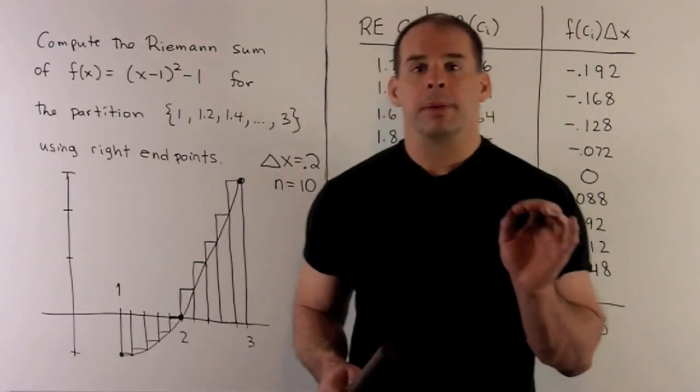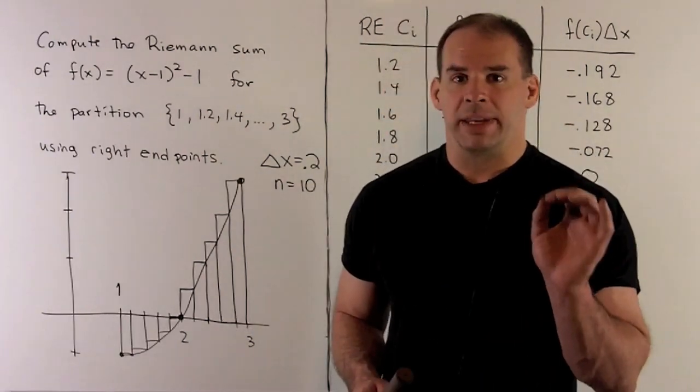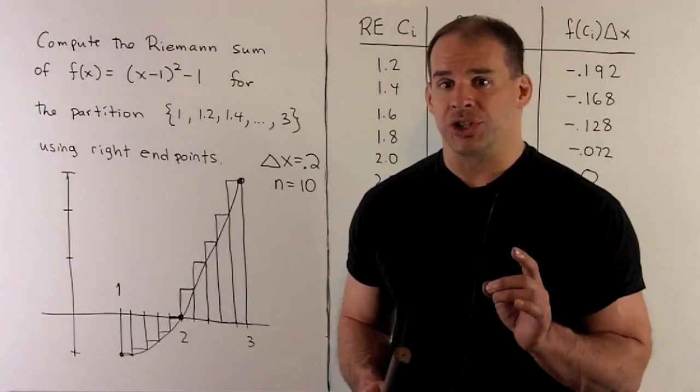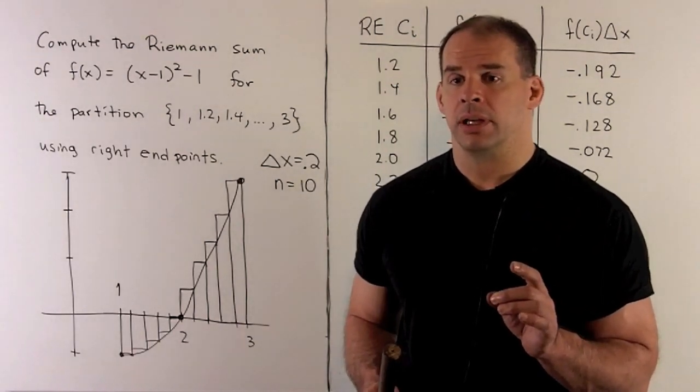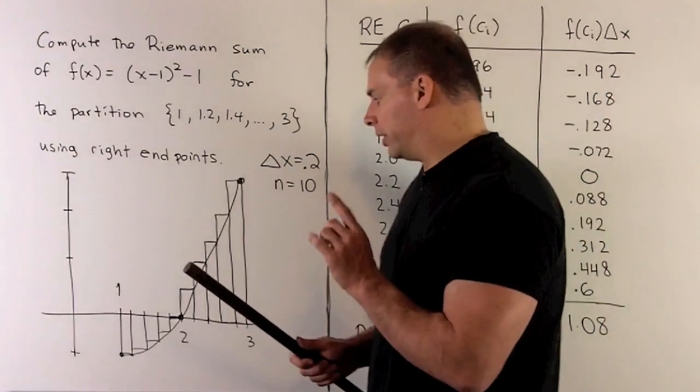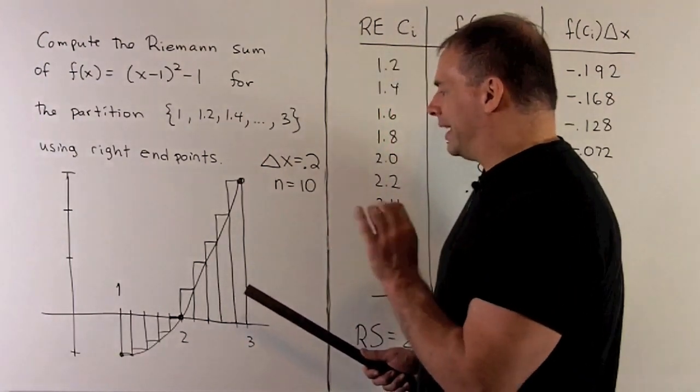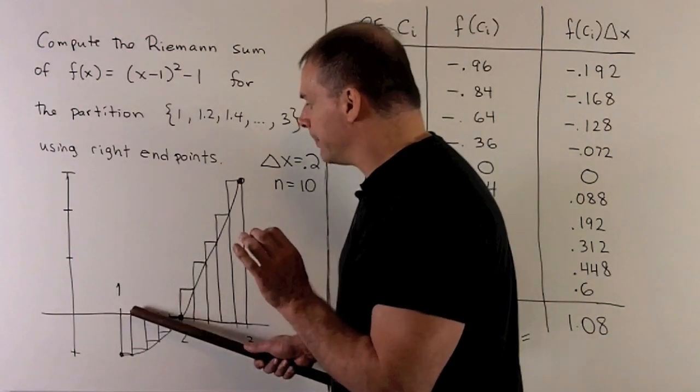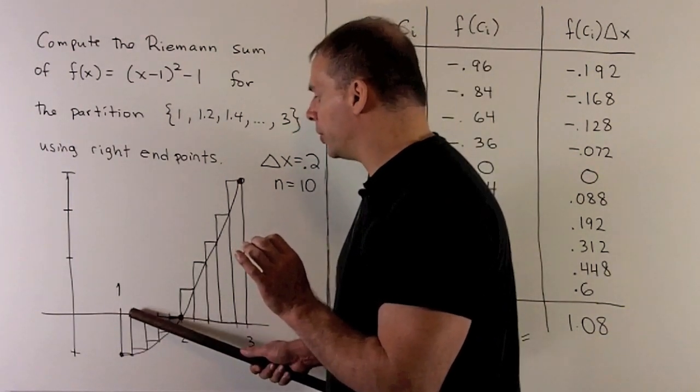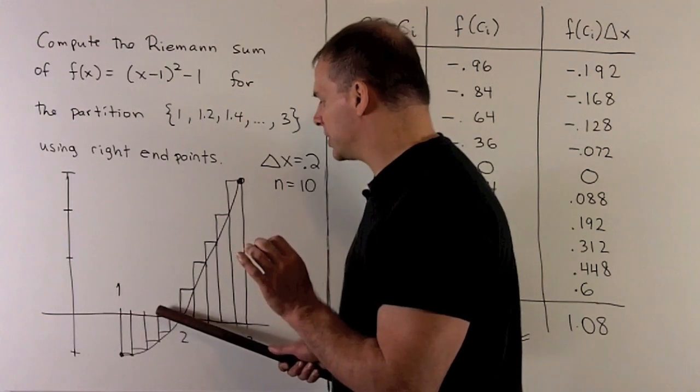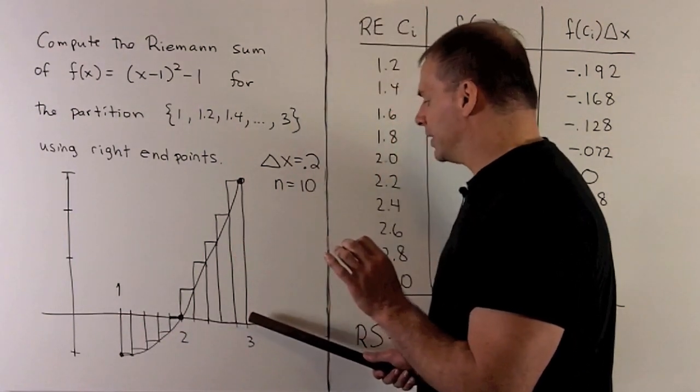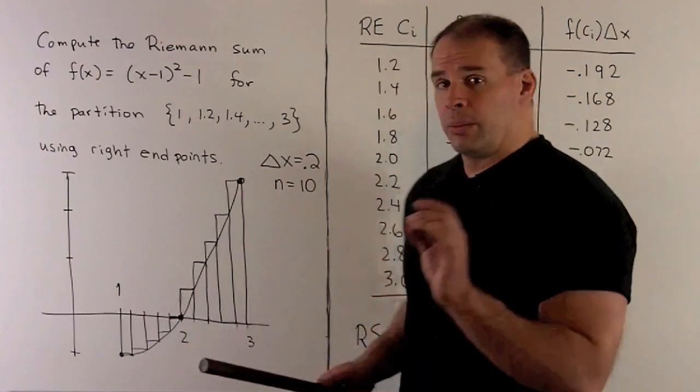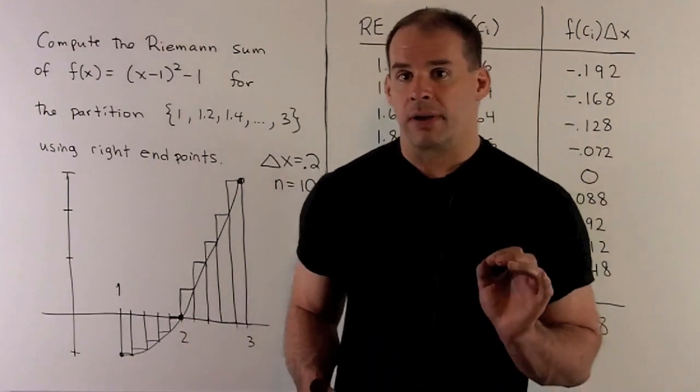Okay, so note here, some of these heights are going to be negative. That just means we'll get out signed area when we do our calculations. Now, what are we going to do here? Well, I'm going to need each right endpoint. So note, if I take a look at what's happening, we're not going to use 1. We're going to start at 1.2, 1.4, 1.6, and then we go all the way out until we get to 3. So that's going to give me 10 points that we compute values off of.